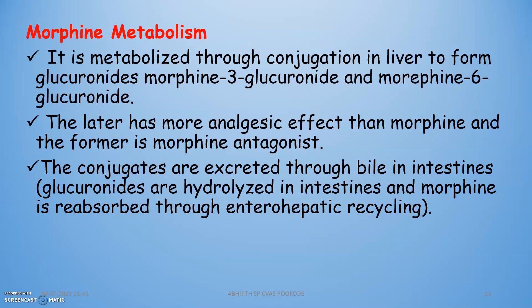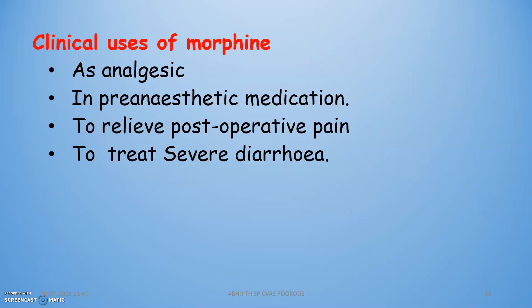Morphine is metabolized by conjugation in the liver to form glucuronides: morphine-3-glucuronide and morphine-6-glucuronide. The latter has greater analgesic effect than morphine itself. The conjugates are excreted through bile into the intestines. Clinically, morphine is used as an analgesic, for pre-anesthetic medication, to relieve post-operative pain, and to treat severe diarrhea — exploiting its constipating side effect.